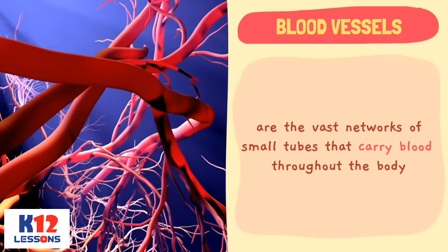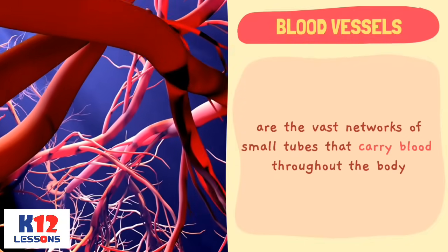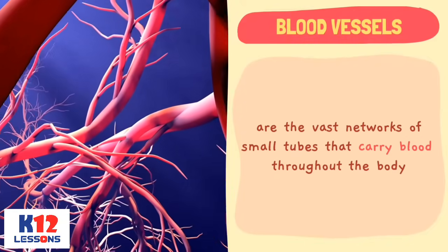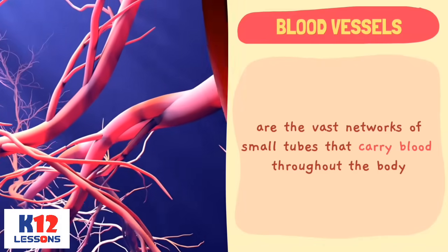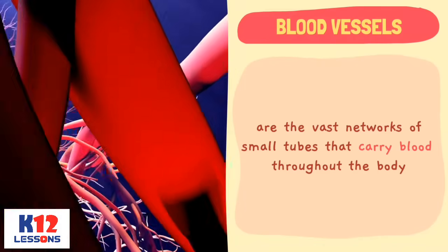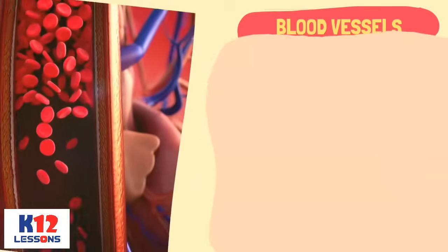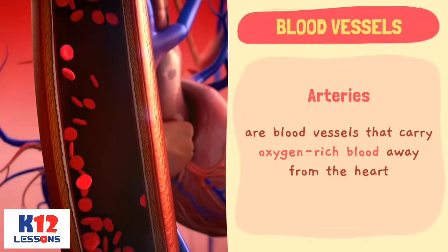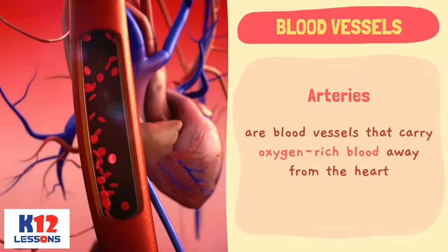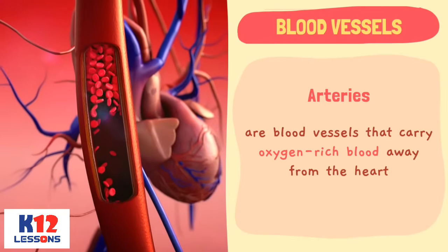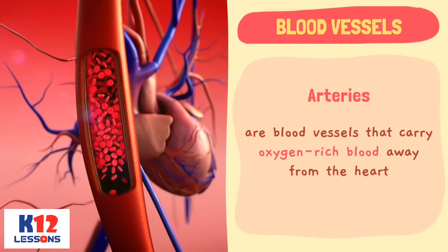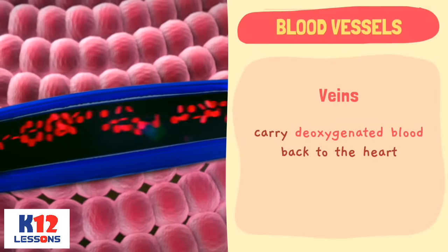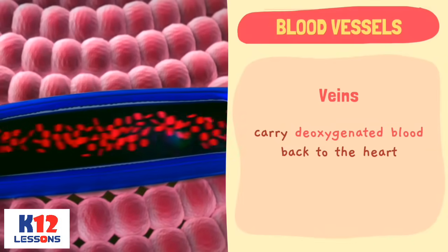The blood vessels are the vast networks of small tubes that carry blood throughout the body. The arteries are blood vessels that carry oxygen-rich blood away from the heart. Veins carry deoxygenated blood back to the heart.